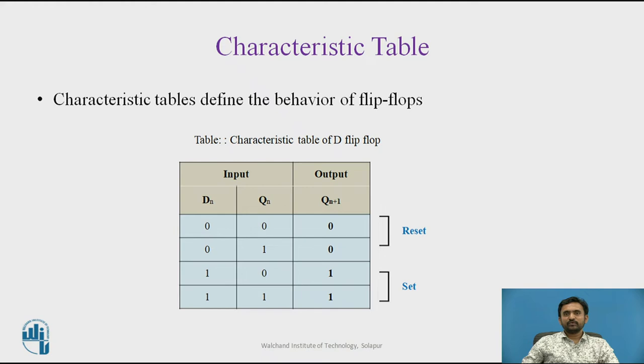Characteristic table defines the behavior of flip-flop. The characteristic table in the third column defines the state of each flip-flop as a function of its input and previous state. Qn refers to the present state and Q of n plus 1 refers to the next state after the occurrence of the clock pulse. The next state of the D flip-flop is completely dependent on the input D and independent of the present state.